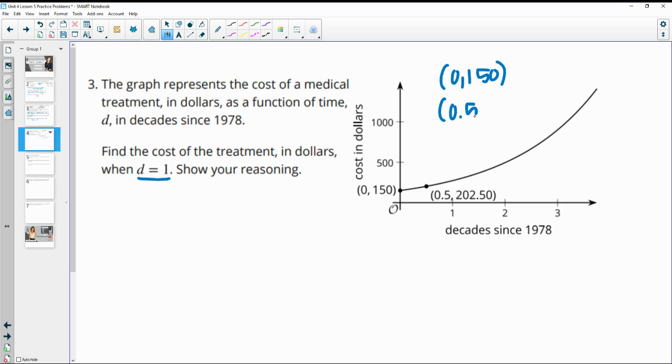Then at 0.5, they say the cost is $202.50. And this represents half a decade. So 0.5 of our D, which is in decades. So this is half of a decade. So we want to find out what it'll be after one decade.